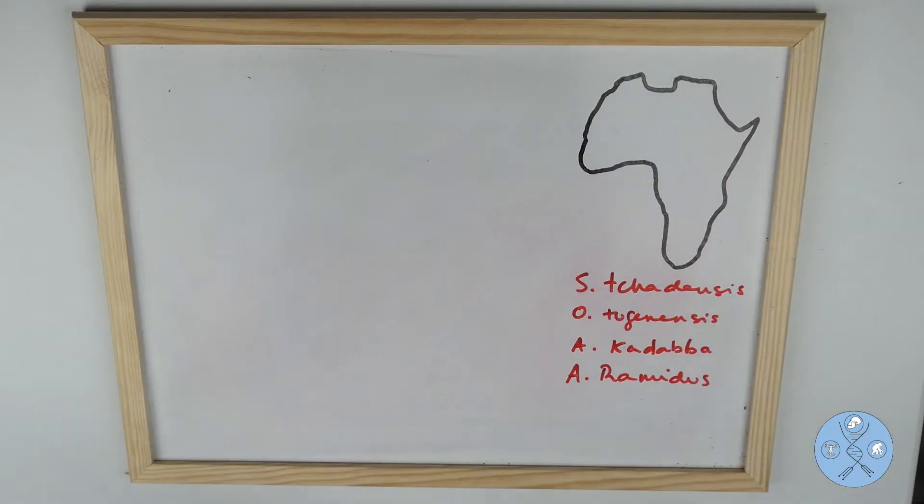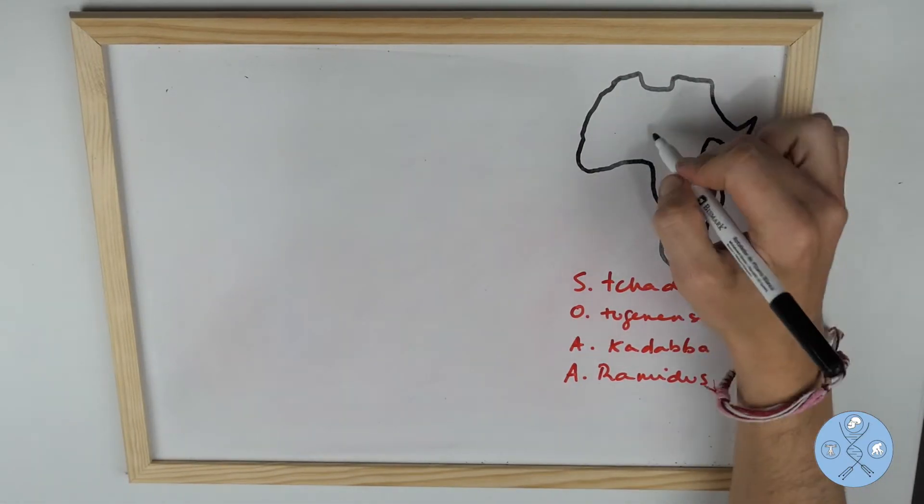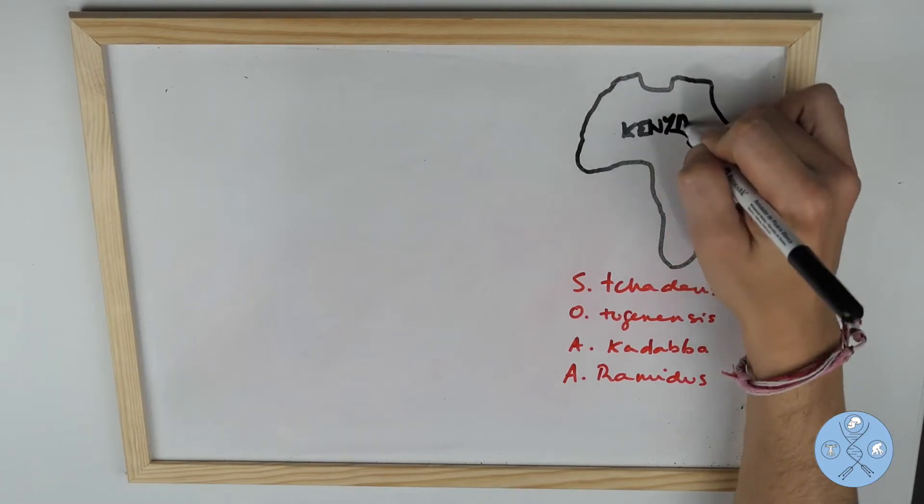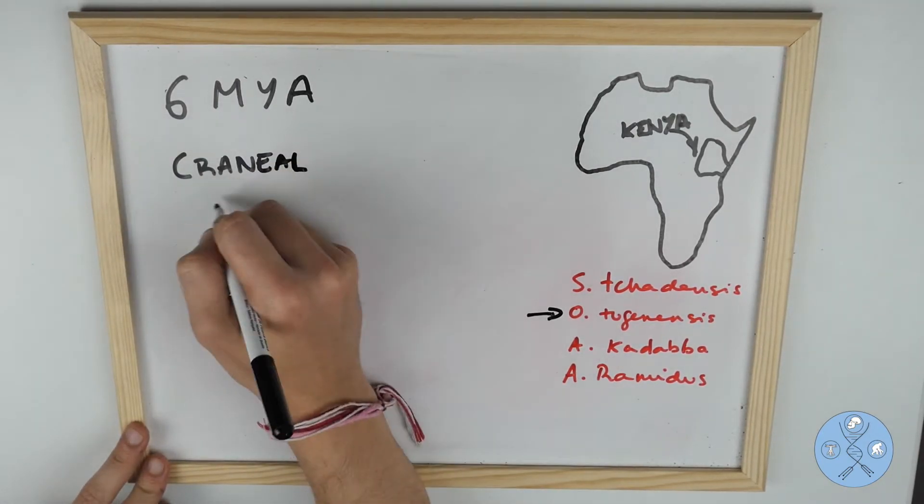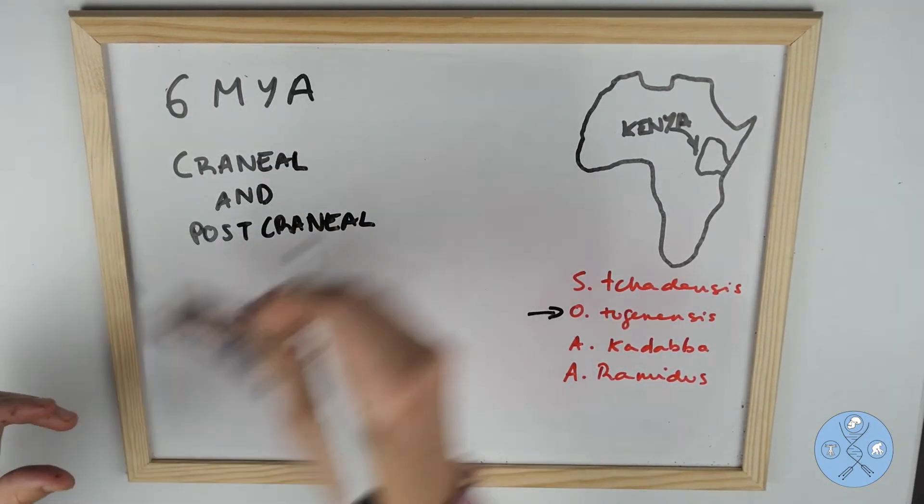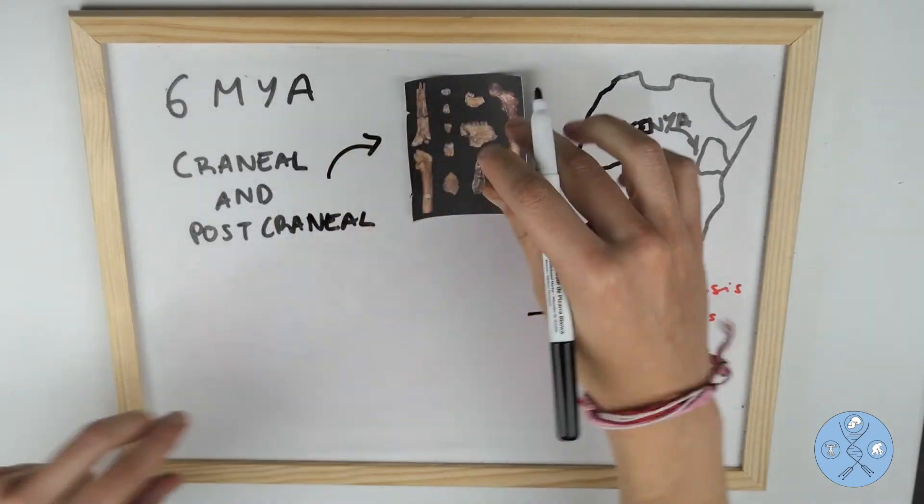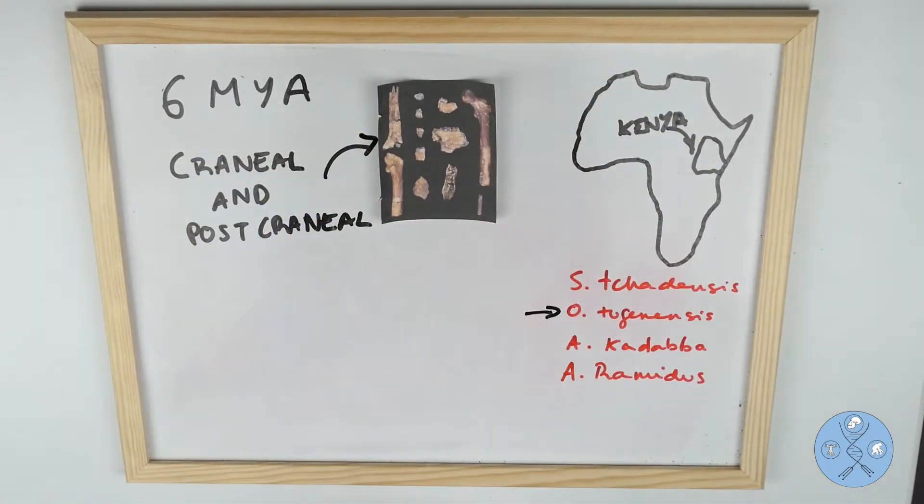The second oldest potential hominin species is Orrorin tugenensis. The fossil evidence was found in Tugen Hills of northern Kenya and has been dated to around six million years ago. The reasons to consider this species a hominin are two, one cranial and the other postcranial. The first one is the thick enamel found in the molar and premolar teeth of this species.